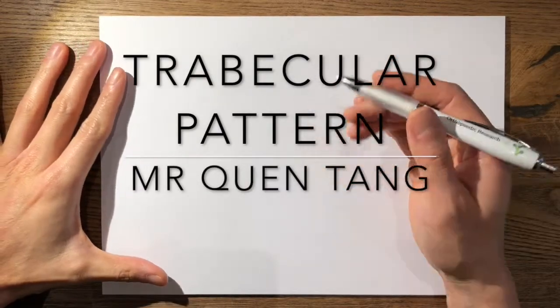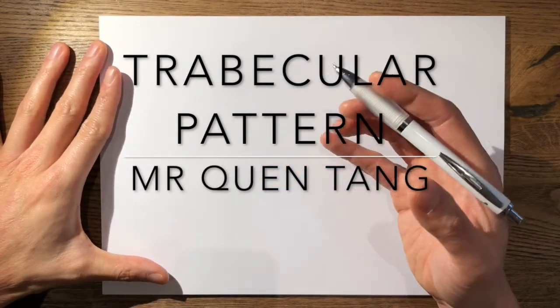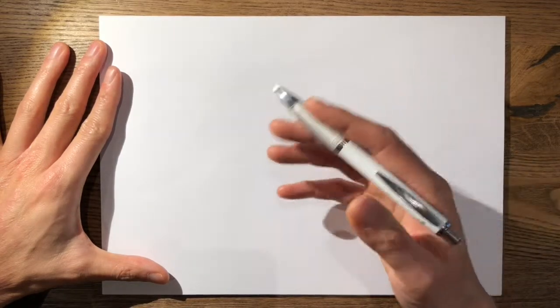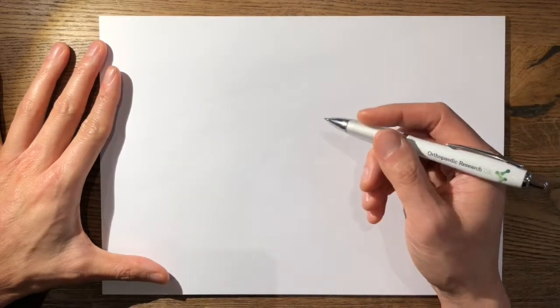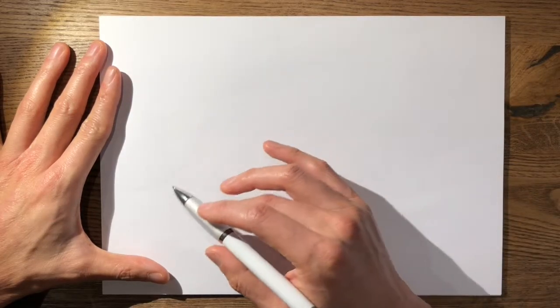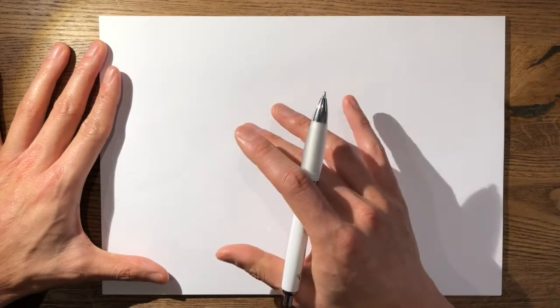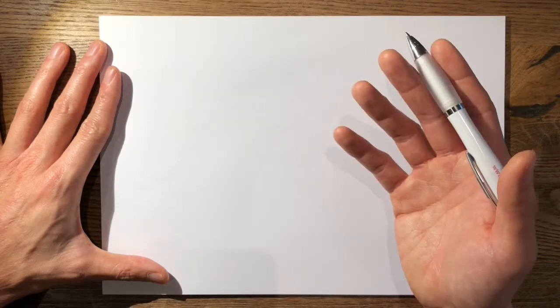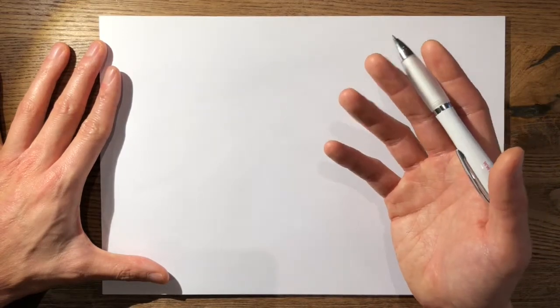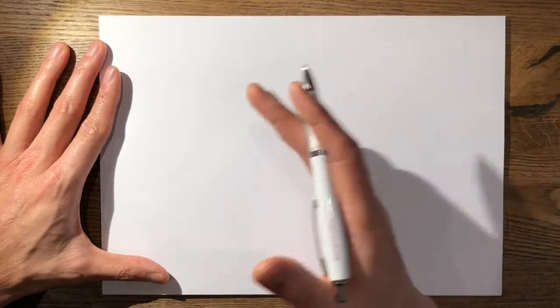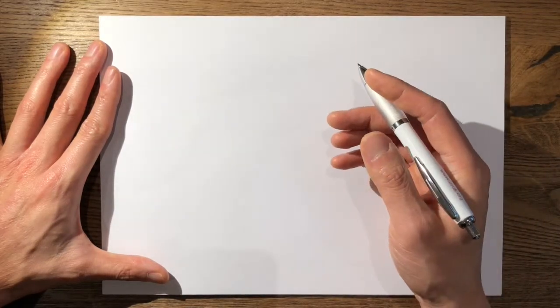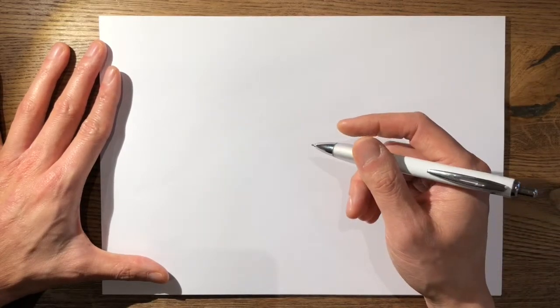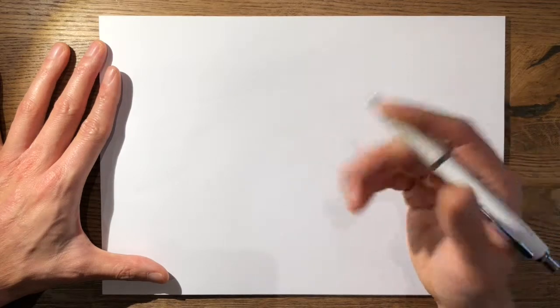It's important to understand for the FRCS exam that the proximal femur exhibits a typical trabecular pattern in order to resist specific tensile and compressive forces placed upon it. These trabecular patterns normally form in lines of stress, and they form as a result of remodeling according to Wolff's Law. They remodel in lines of forces to allow the bone to resist those specific tensile and compressive stresses and loads across the proximal femur.